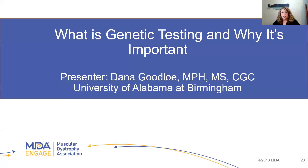Now we're going to hear from Dana Goodloe, who is the Supervising Genetic Counselor for the University of Alabama at Birmingham. She began at UAB in 2011 as a genetic counseling intern and completed her genetics training with the UAB Genetic Counseling Training Program in 2013. She has served as a genetic counselor for the UAB Muscular Dystrophy Association Multidisciplinary Care Center since 2015, and in addition to neuromuscular disease, Dana primarily sees patients in pediatric general genetics and cleft and craniofacial clinic. So Dana, thank you for being here. You can go ahead and present your slides.